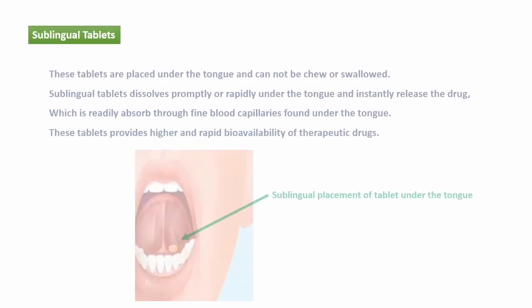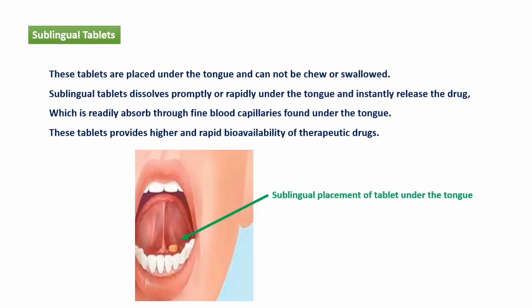Sublingual tablets — इन tablets को tongue के नीचे place करते हैं; इन्हें break या swallow नहीं किया जाता। ये tablets rapidly — within few seconds — mouth में dissolve हो जाती हैं और drug release कर देती हैं। यह drug tongue के नीचे present fine blood capillaries से instantly absorb होकर blood में पहुँचती है और rapidly action show करती है। Most popular example is nitroglycerin tablet, which is used in the case of heart attack.